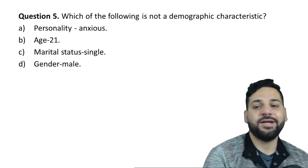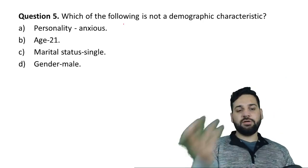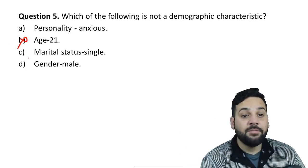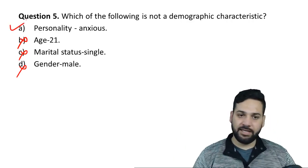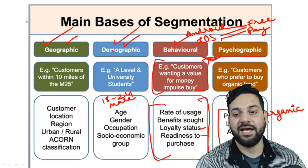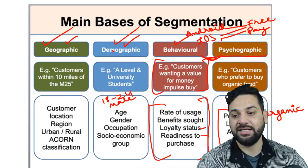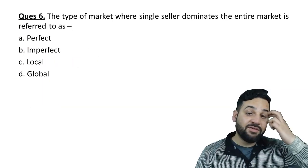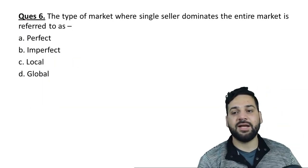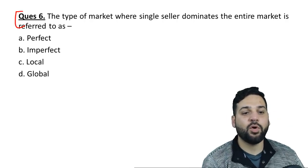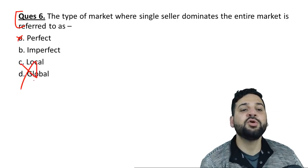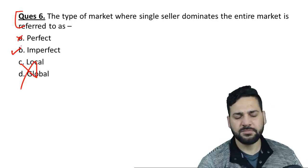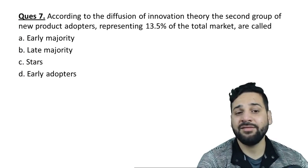Question 5: 'Which of the following is NOT a demographic characteristic?' Age, marital status, and gender are demographic. Personality is not — personality belongs to psychographic segmentation. Question 6: 'The type of market where a single seller dominates the entire market is referred to as what?' It is not perfect, local, or global — it is an imperfect market, specifically a monopoly.